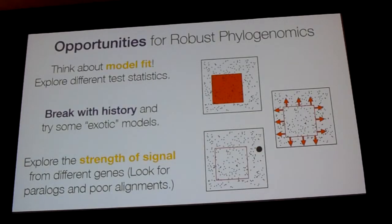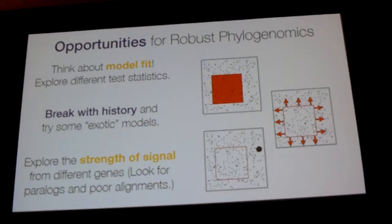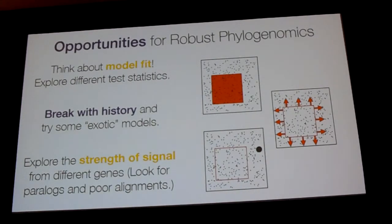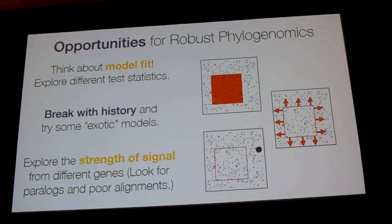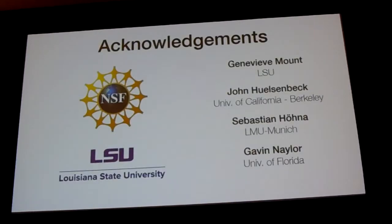More broadly, the points I'm trying to make are that there are lots of opportunities to conduct phylogenomics in a more robust and creative way, and these are three strategies we've tried — there are many others. I hope this encourages us all to think more creatively about the way we approach generating phylogenetic trees from genomic-scale datasets. I'd like to acknowledge NSF for funding, LSU for funding and computational support, and a series of collaborators who've been integral to a lot of these projects. I'd be happy to take any questions.